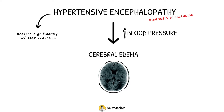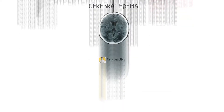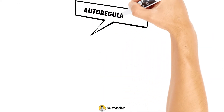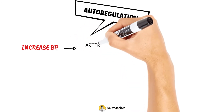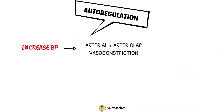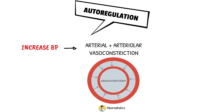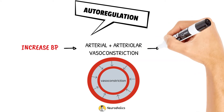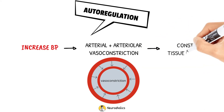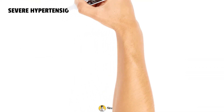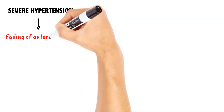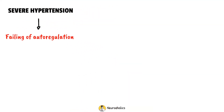Sometimes by as little as 10% to 15%. In normal autoregulation, when blood pressure rises mildly to moderately, the first reaction is arterial and arteriolar vasoconstriction. This autoregulatory mechanism keeps tissue perfusion at a generally constant level while also preventing pressure increases from being transferred to smaller, more distant arteries. Autoregulation, on the other hand, ultimately fails with growing severity of hypertension.